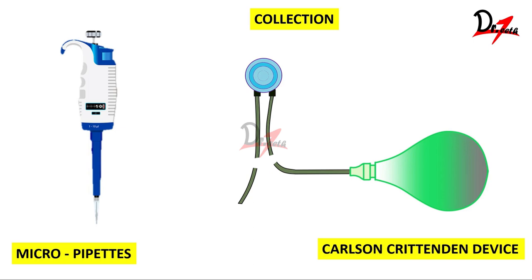The third technique uses micropipettes. This technique is used to collect saliva from one specific salivary gland — for example, the sublingual or submandibular gland. After blocking the orifice of the parotid gland with a gauze pad or cotton, saliva is collected from the floor of the mouth using a digital micropipette, which gives the volume as a digital reading.